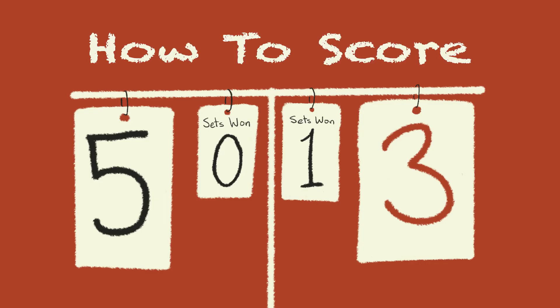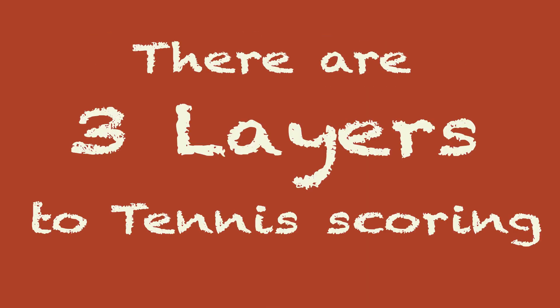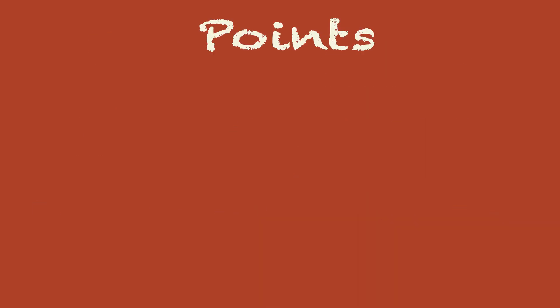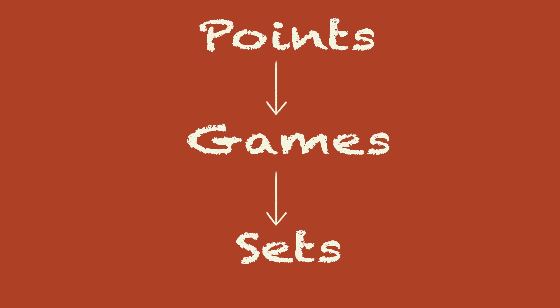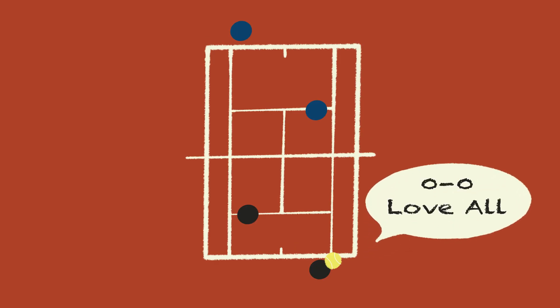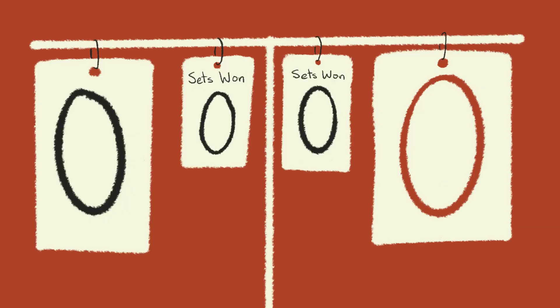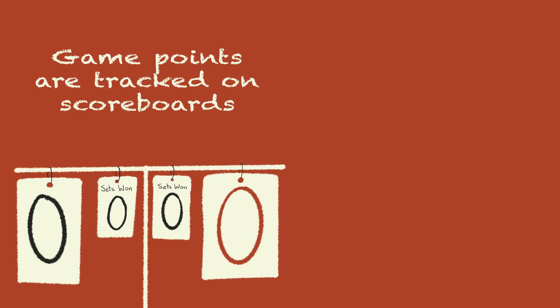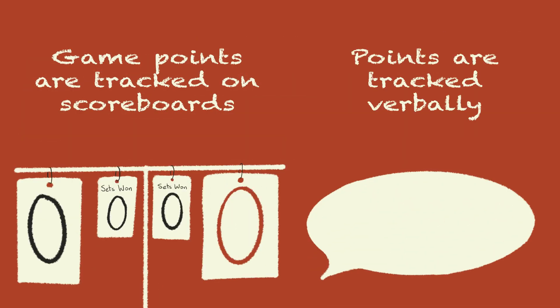Now let's talk about scoring. There are three layers to scoring in an overall tennis match: points, games, and sets. Each time you start a point, you say the score before serving. At the beginning, this is zero to zero — love all. Zero to zero refers to the amount of games won, and love all refers to the amount of points won.